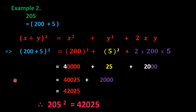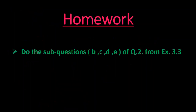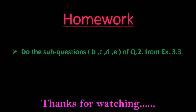Therefore, 205² = 42025. From exercise 3.3 question 2a has been solved. The remaining four questions — 2b, 2c, 2d, and 2e — you should solve by yourself, and if you have any problem you can contact me.